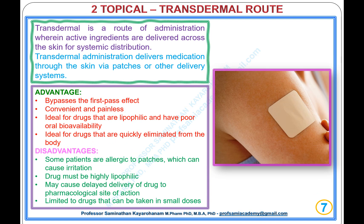Type 2, Topical: Transdermal Route. Transdermal is a route of administration where active ingredients are delivered across the skin for systemic distribution via patches or other delivery systems. Advantages: bypasses the first-pass effect, convenient and painless, ideal for drugs that are lipophilic with poor oral bioavailability, and ideal for drugs that are quickly eliminated from the body.